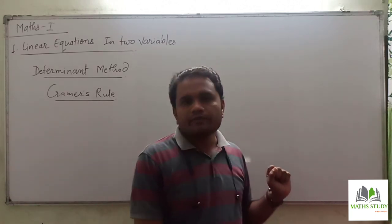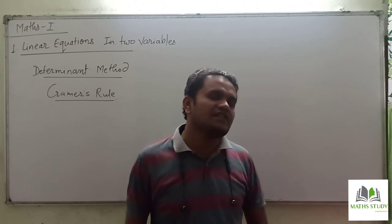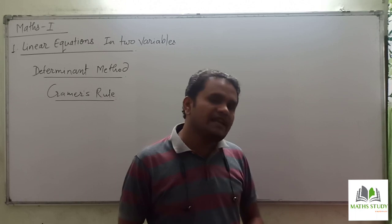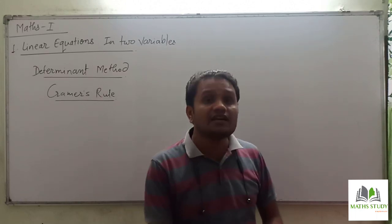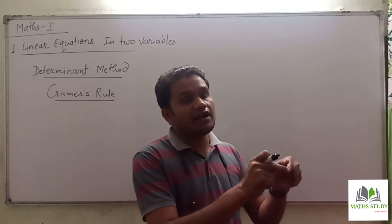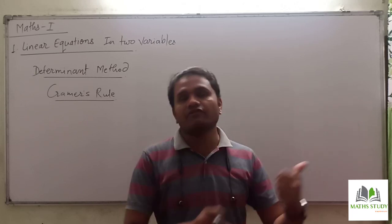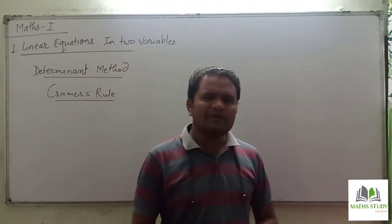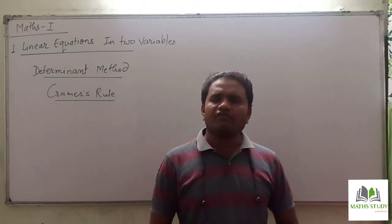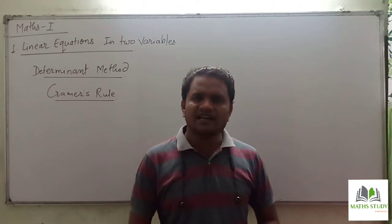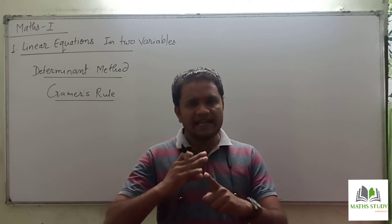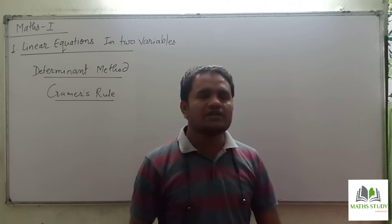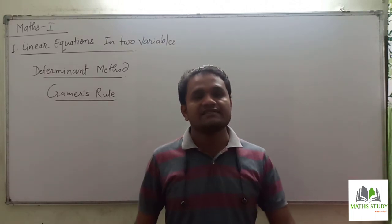In Exercise 1.1, we saw the elimination method — we eliminated one variable, found the value of the other, substituted it, and got the second variable's value. Another method is the graphical method: draw the graphs of two equations (which are lines), and wherever they intersect, that point is the solution.